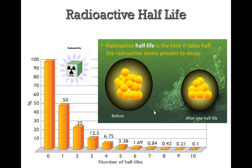What is half-life? Radioactive half-life is the time it takes half the radioactive atoms present to decay. For example, here we have 16 atoms — from 16 you have 8, so half of them are gone in one half-life. In the next radioactive half-life, from 8 you go to 4, and then from 4 to 2.